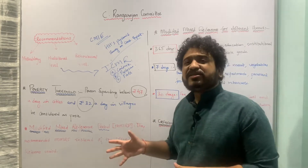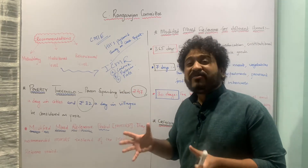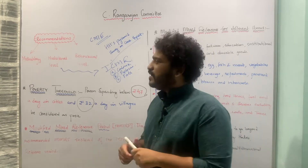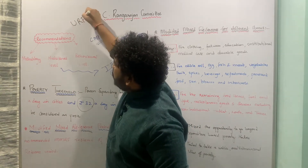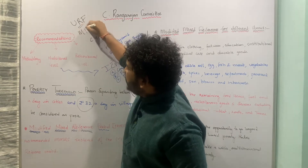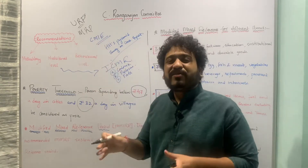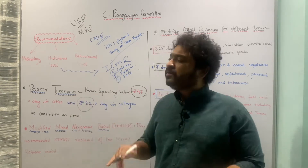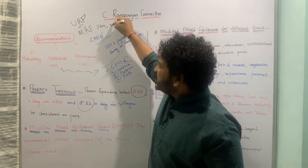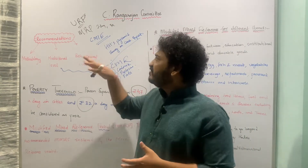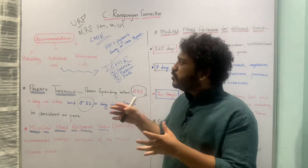Furthermore, there was a drastic change in the usage of the reference period. This committee recommended a Modified Mixed Reference Period (MMRP). In a previous lecture I talked about the Uniform Reference Period (URP), where the same reference period — recalling consumption of the previous seven days — is used for all commodities. Then there is the Mixed Reference Period, where for some commodities the recall is seven days, for others 30 days, and for some 365 days.